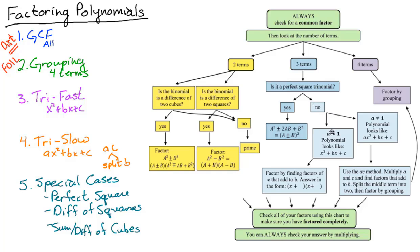If not, no worries. Check the polynomial's leading coefficient. If it looks like this, then it's up here and it's Try Fast. It'll factor like this: things that multiply to C and add to B. It's a very fast one-step.